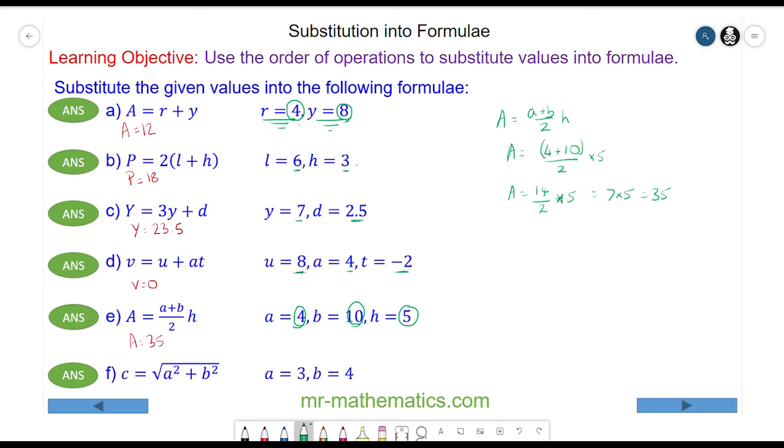And finally, for question f, we have c equals the square root of a squared plus b squared, where a is 3 and b is 4. So c will equal the square root of 3 squared plus 4 squared.